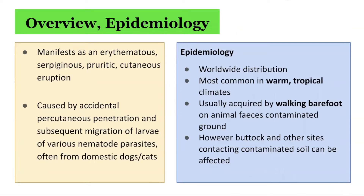It manifests as an erythematous, serpiginous, pruritic cutaneous eruption. The infection is usually acquired by walking barefoot on ground contaminated with animal feces, but the buttock and other body sites can become infected by contact with contaminated soil or sand.